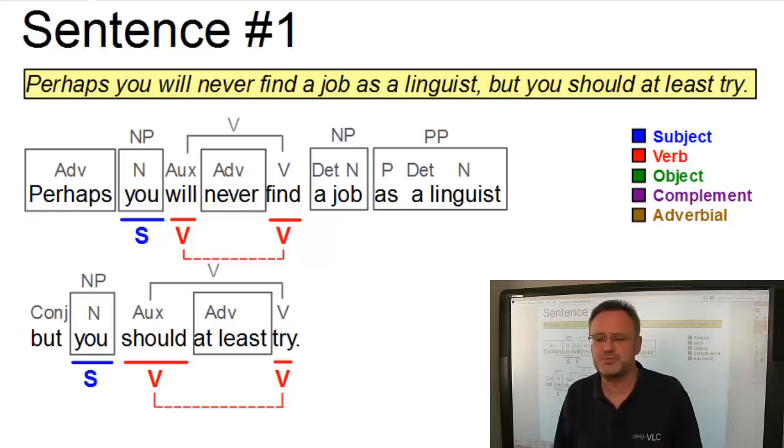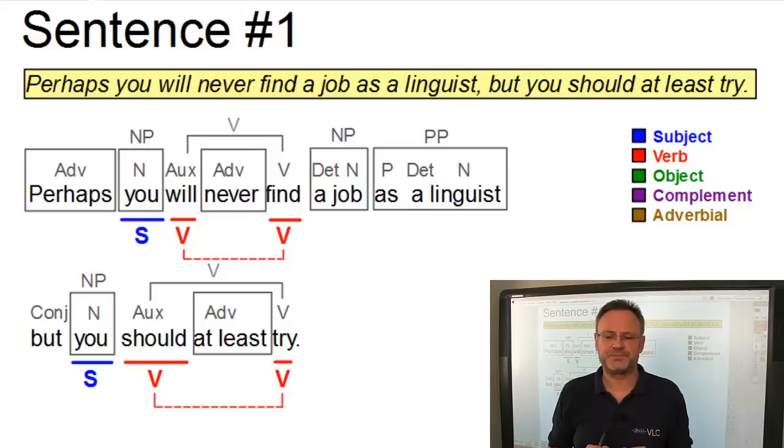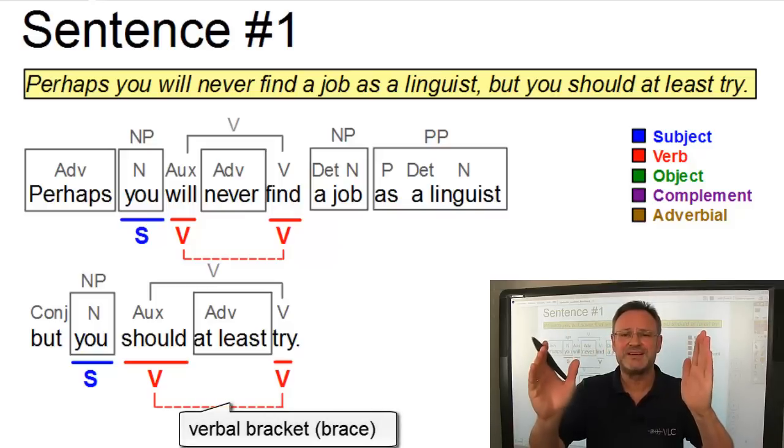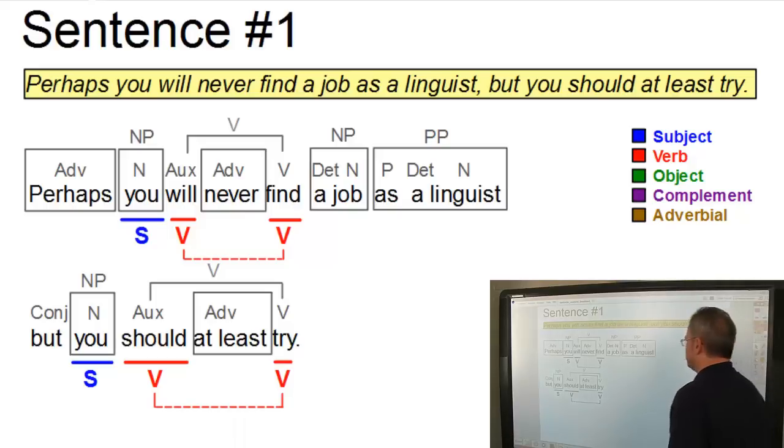Now, in both clauses, we have a verb consisting of an auxiliary verb plus a main verb with an adverb in between. Thus, the two parts of the verb constitute a so-called verbal bracket or brace. In the first clause, we also have an object.